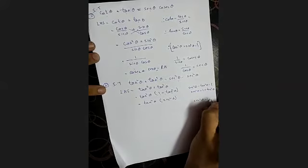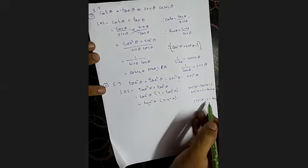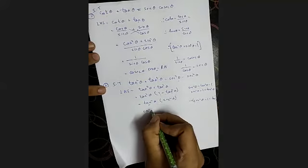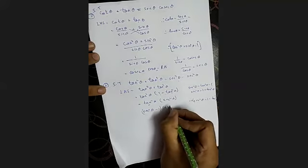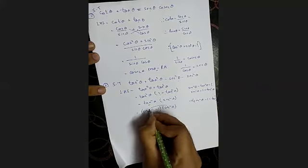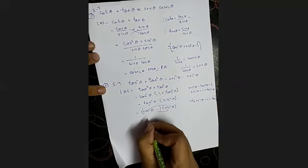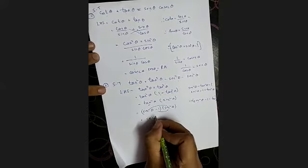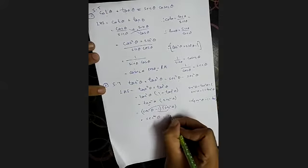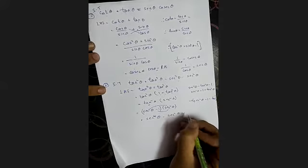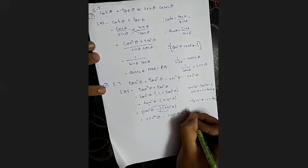Secant squared theta minus 1 is equal to tan squared theta. So instead of this tan squared theta, I'm going to substitute secant squared theta minus 1. So we have secant squared theta minus 1, into secant squared theta. Now multiply and open the bracket: secant squared theta into secant squared theta gives secant to the power 4 theta, minus secant squared theta. That is equal to RHS.